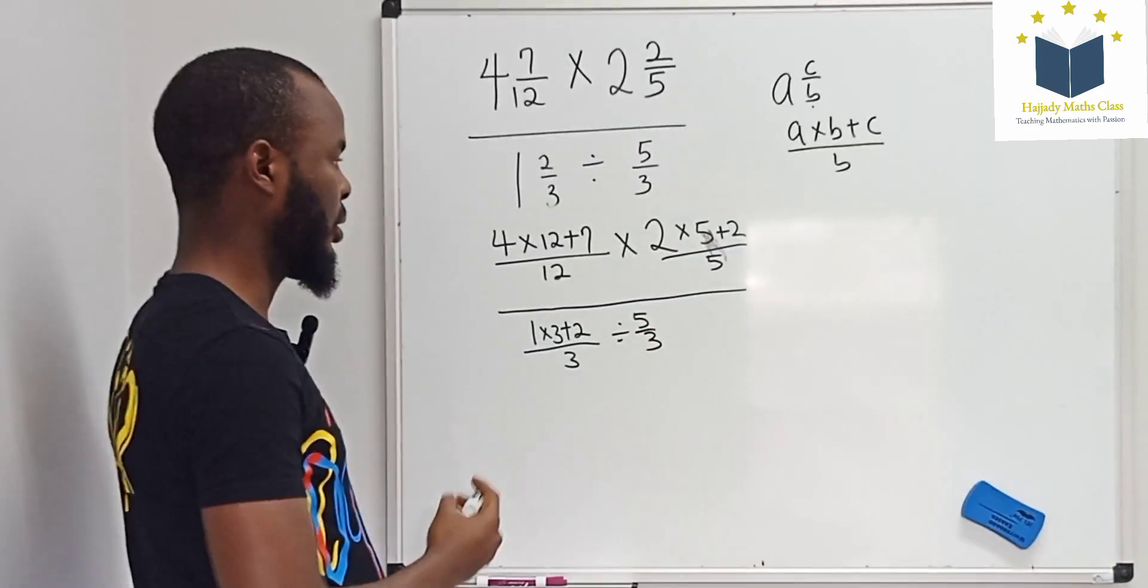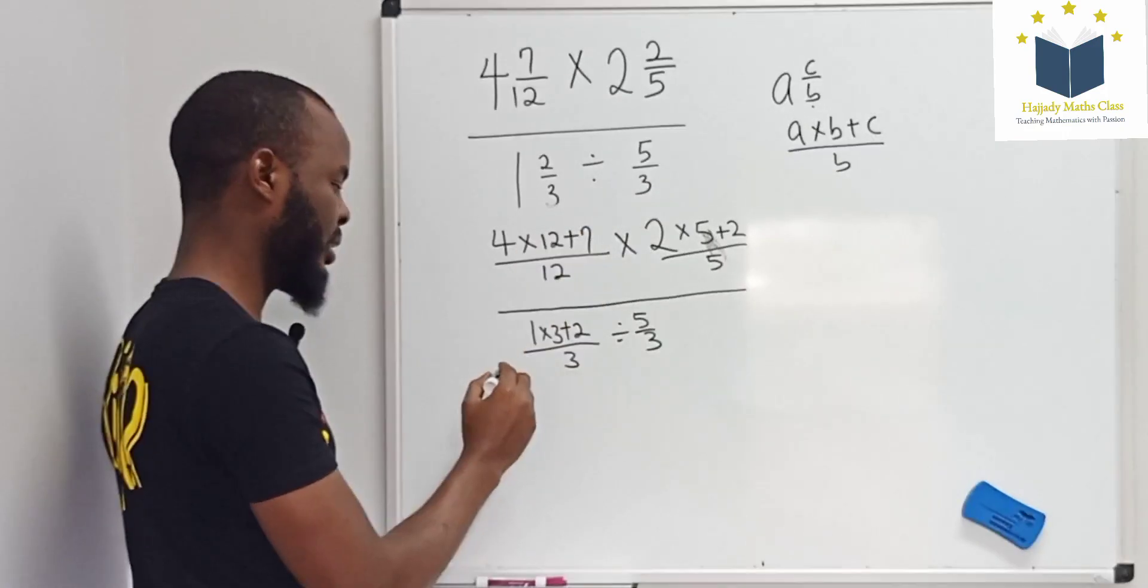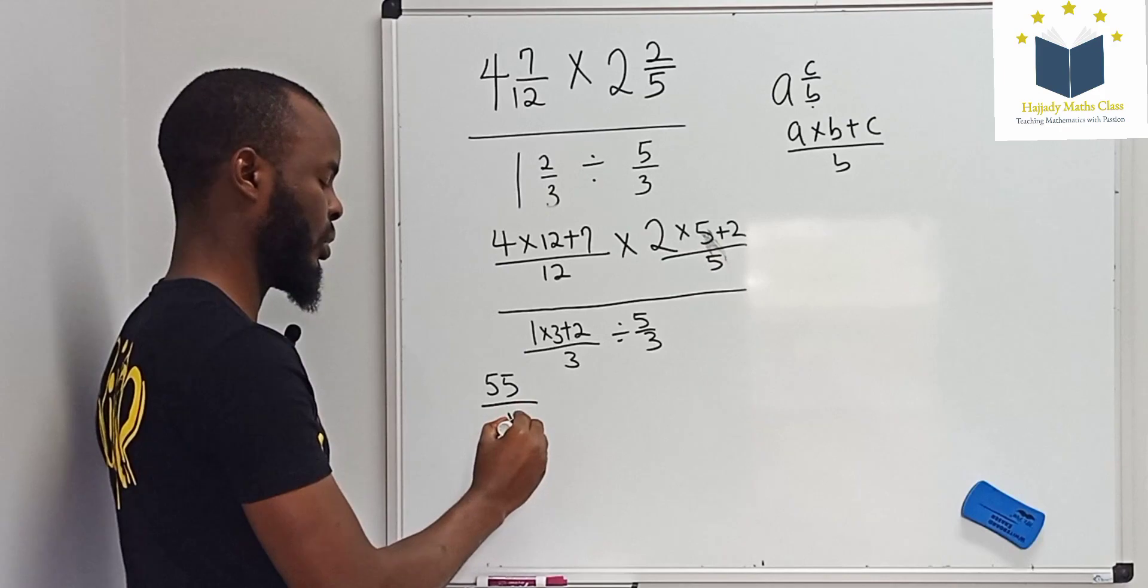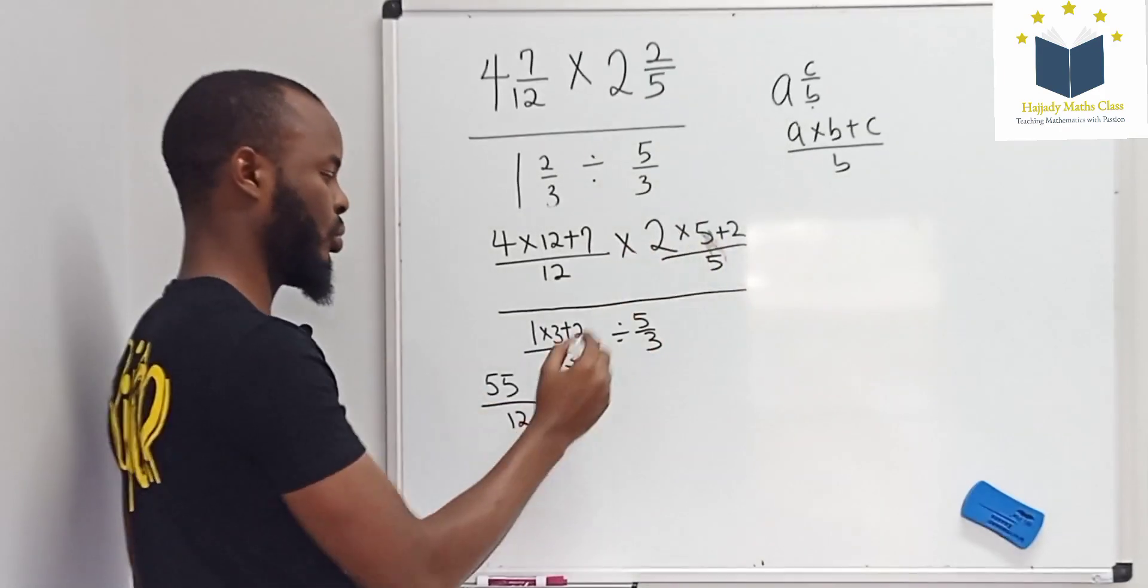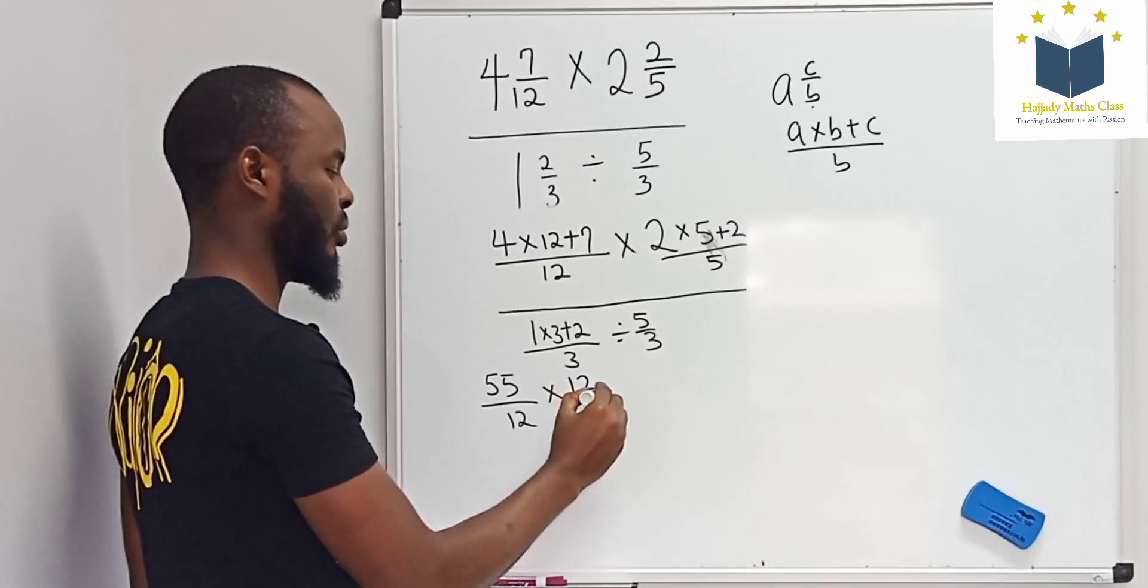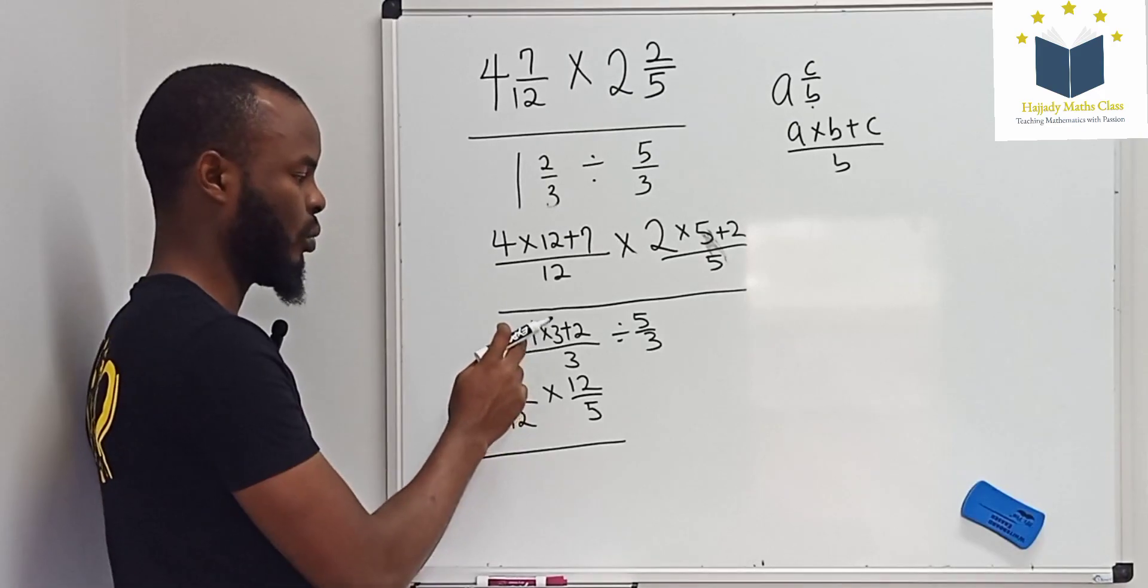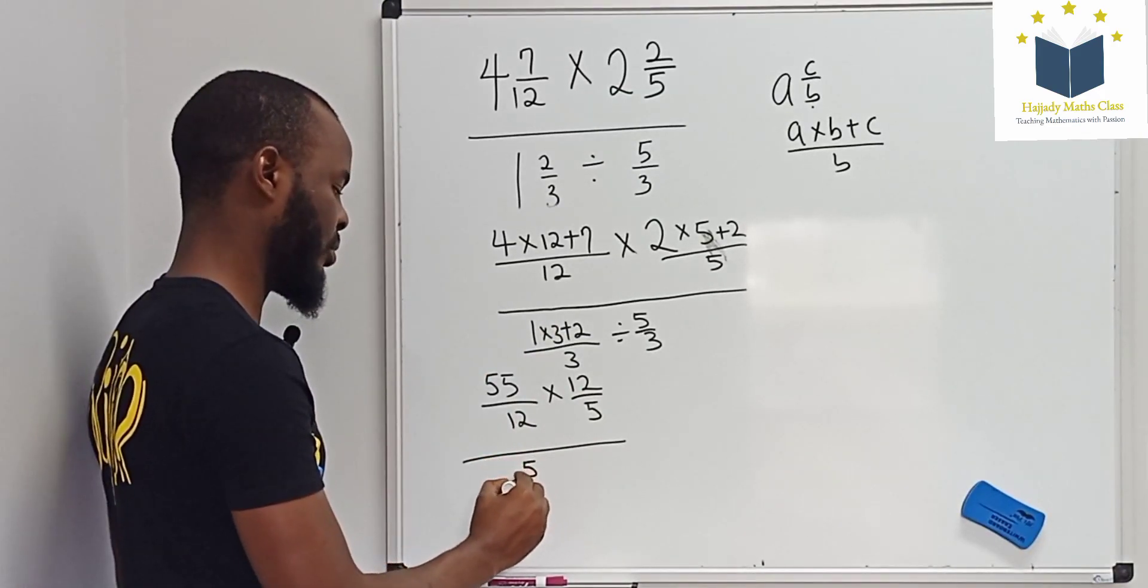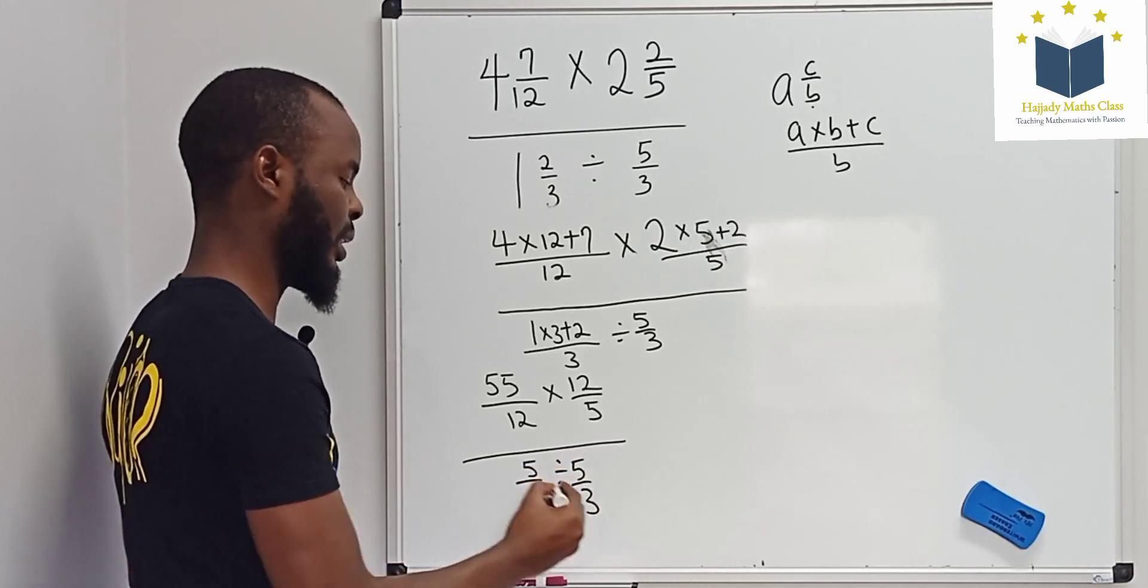Okay, now using this, 4 multiplied by 12 gives 48 plus 7 gives 55 over 12, multiplied by 2 times 5 gives 10 plus 2, which is 12 over 5, divided by 5 over 3.